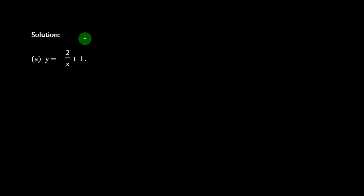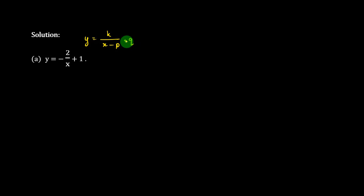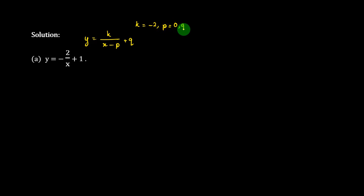y squared, k, y, h minus b plus 2, compared to 1h plus 1. k r minus 2 here, p r 0 0 here, 2 r y here.